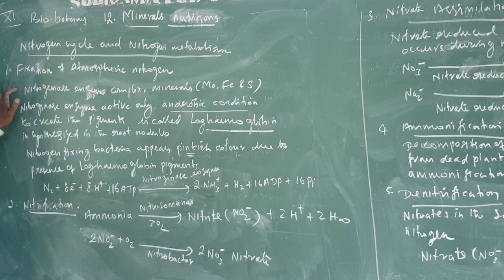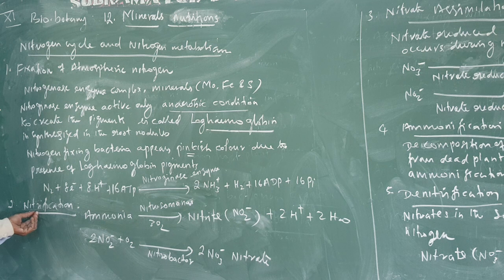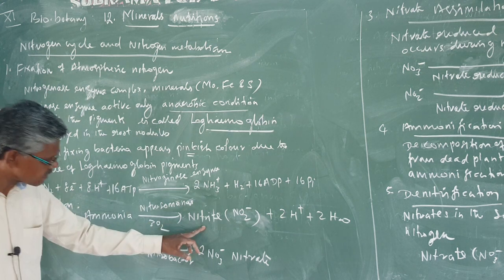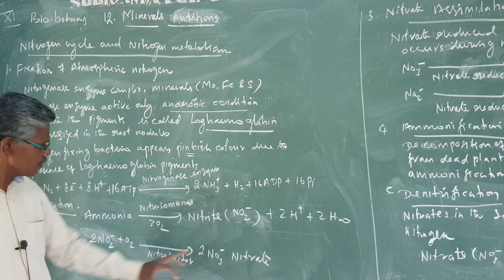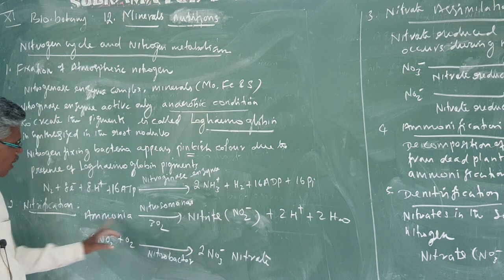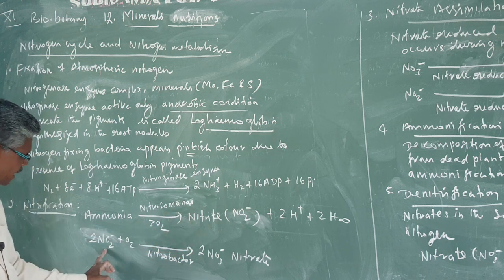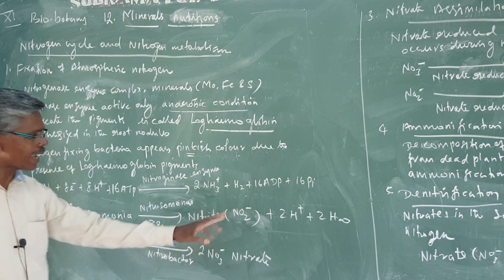That is the introduction to the nitrogen cycle and nitrogen metabolism. The fixation of atmospheric nitrogen is covered. The next topic is nitrification — ammonia is converted into nitrite, and then nitrite is converted into nitrate.